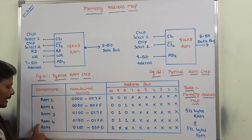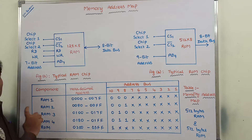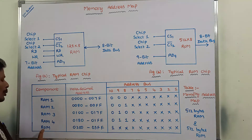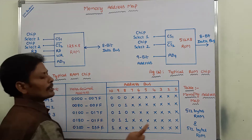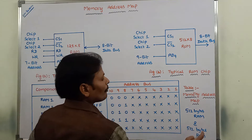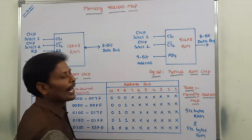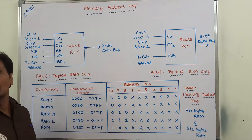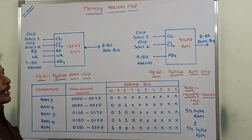A single partition can be assigned to ROM, with a capacity of 512 bytes of ROM.